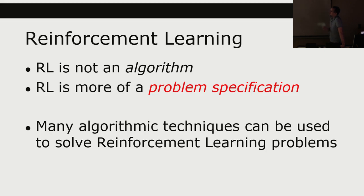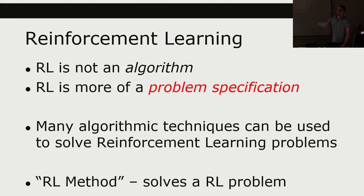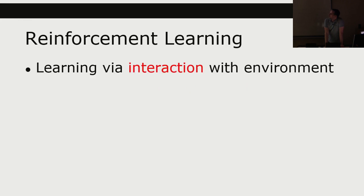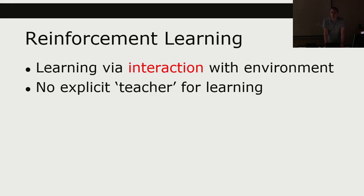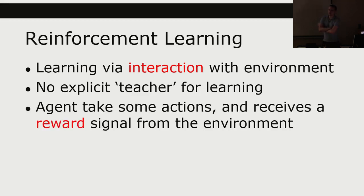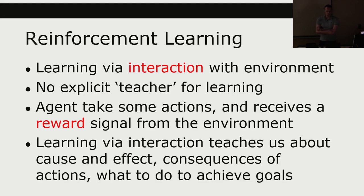Reinforcement learning learns via interaction with the environment. There is no explicit teacher or supervisor telling you exactly what to do in any given situation — the agent takes an action and receives a reward signal from the environment. This teaches the agent about cause and effect, the consequences of actions, and how to achieve its goals.